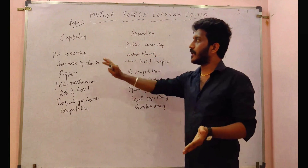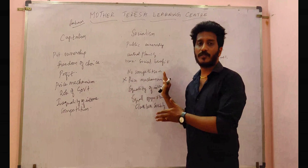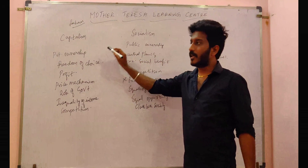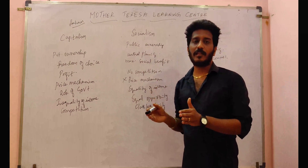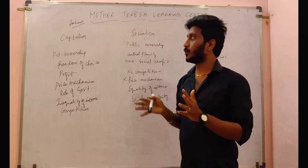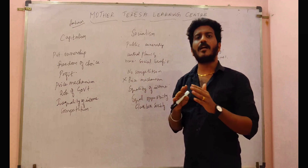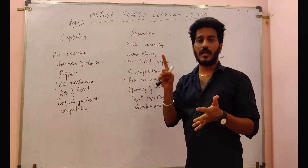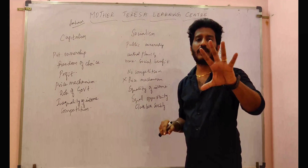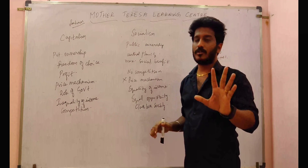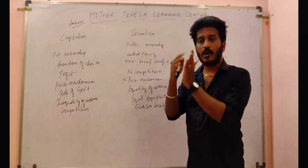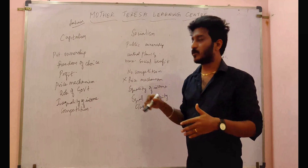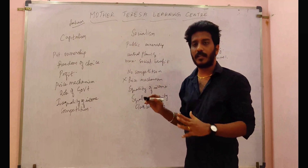Socialism is the extreme opposite — black and white. In a socialist economy, it is all government control. School, hospital, college, radio station, airport — everything is government controlled. You have everything to serve the government. Public ownership is complete.